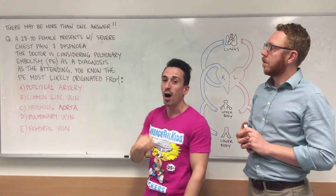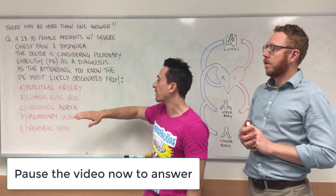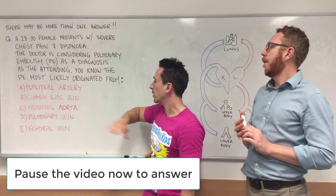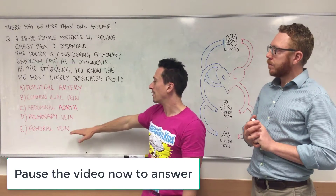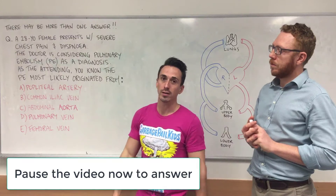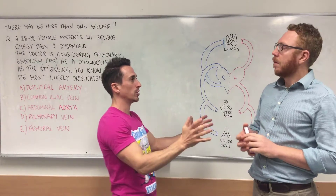Here are the five answers: popliteal artery, common iliac vein, abdominal aorta, pulmonary vein, and femoral vein. So Matt, how do we approach this question?